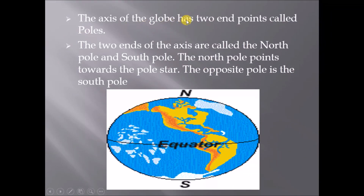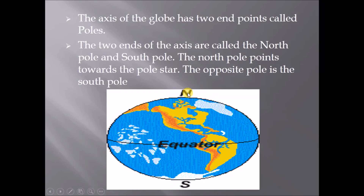The axis of the globe has two end points called poles. The two end points of the axis are called the North Pole and the South Pole. The North Pole points towards the Pole Star. The opposite pole is the South Pole.